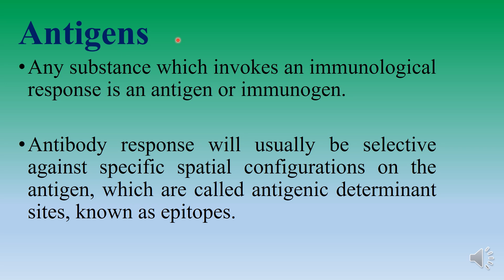Before we go into the details of types of immunity, let us first understand what antigens are. Any substance which is capable of eliciting an immunological response is known as an antigen or an immunogen. The antibody response will usually be selective against specific configurations on the antigen, which are called antigenic determinant sites known as epitopes. The part of the antigen that elicits an immunological response is known as the epitope, and it binds to the antibody.